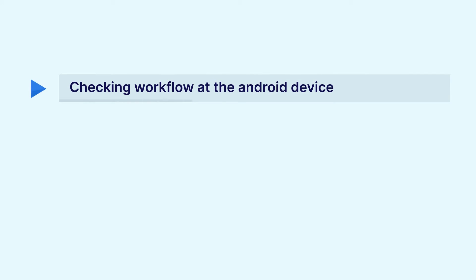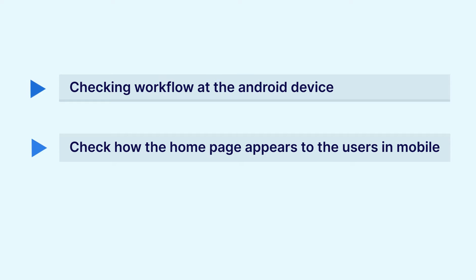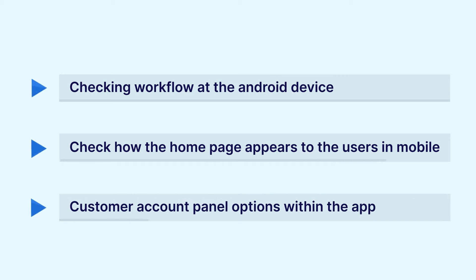In today's video tutorial we'll be checking the workflow at the mobile end for Android devices, and we'll be seeing how the mobile application appears to customers — the home page sections, the customer account panel options, and much more. Before I proceed, please subscribe to our channel and press the bell icon to receive the latest updates. Let's go ahead and see this mobile application on the Android end.